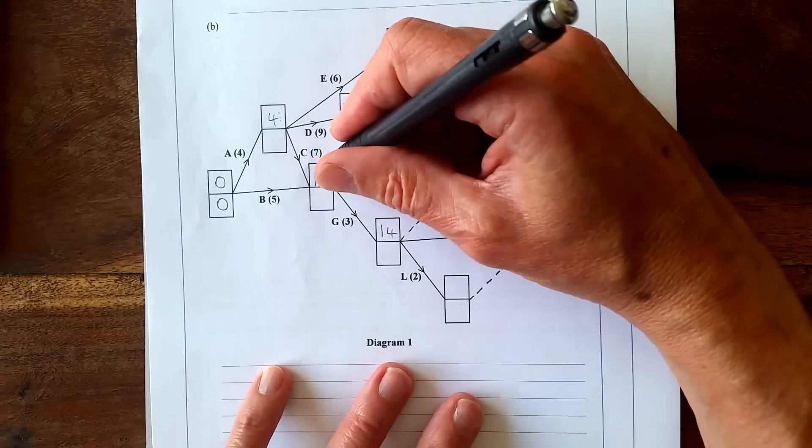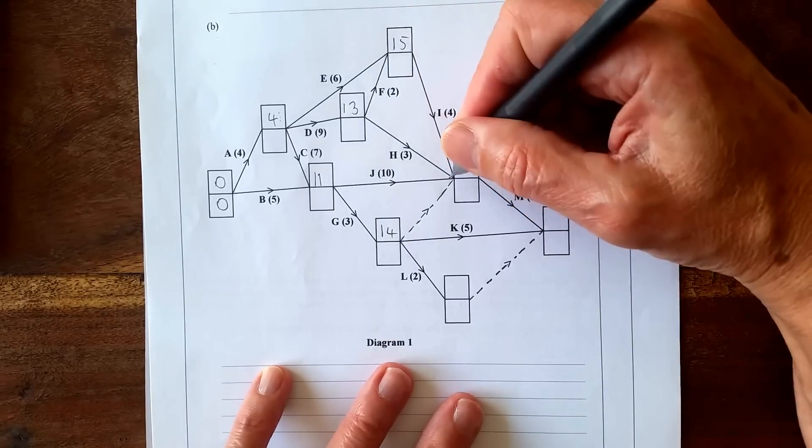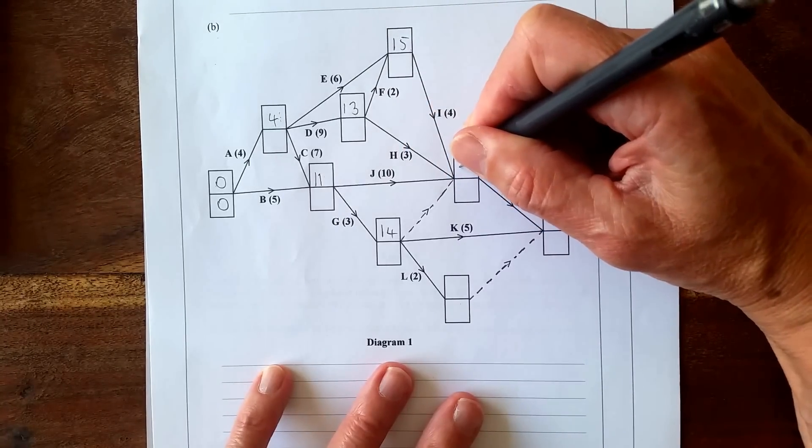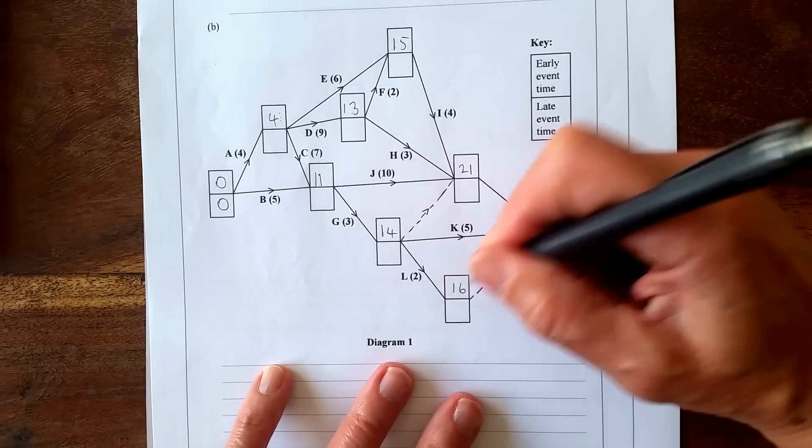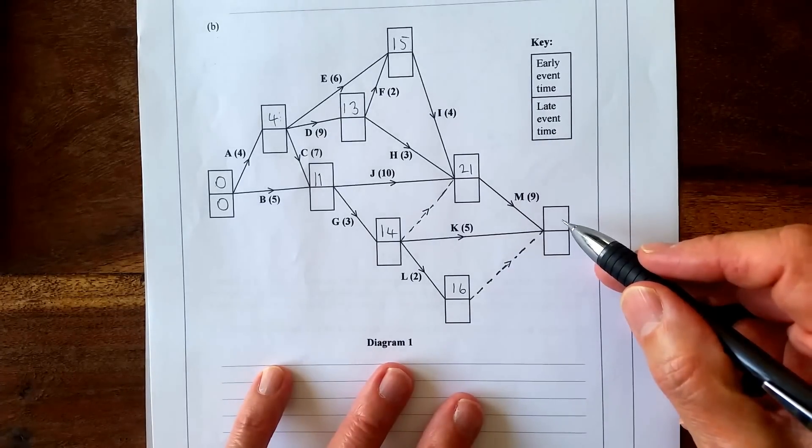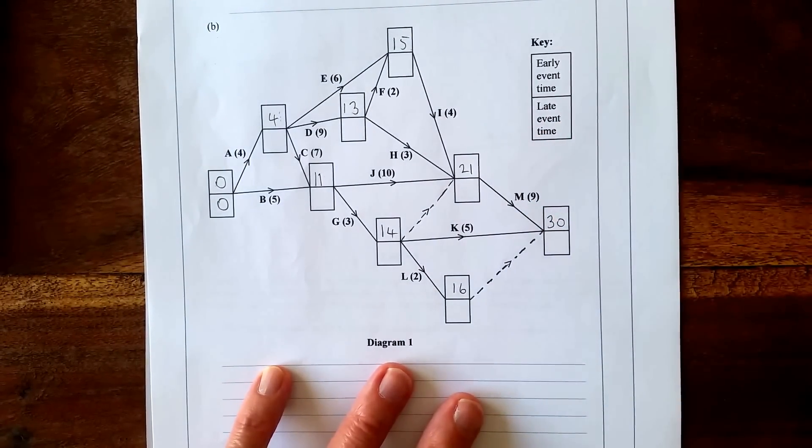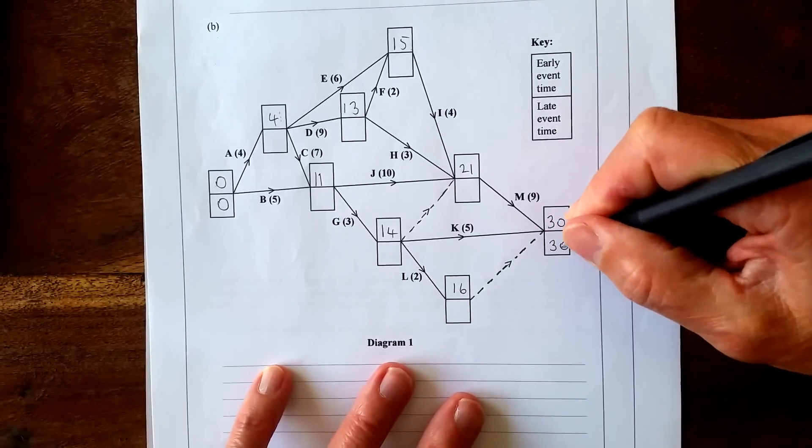11 plus 10 is 21, which is bigger, and 15 plus 4, 13 plus 3, so 11 plus 10 is the biggest, 21. 14 plus 2 is 16, and the W here 16, and 21 plus 9 is 30, which is the biggest.